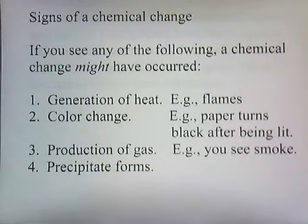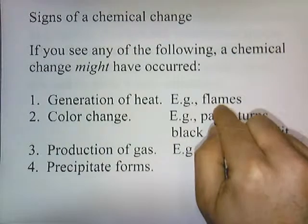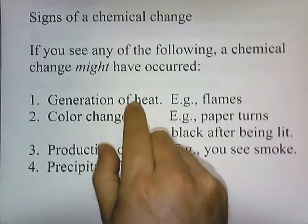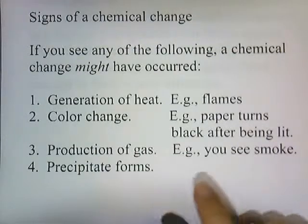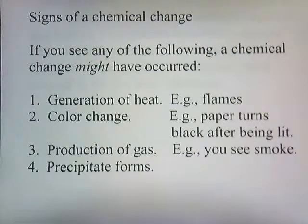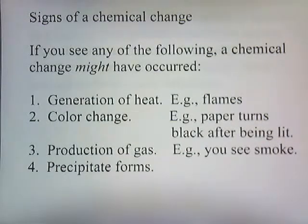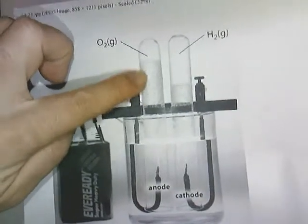Signs of a chemical change — how do you know when a chemical change has occurred? If you see any of the following, a chemical change might have occurred. Take burning a piece of paper as an example: you see flames, so heat being generated is one sign. The paper also turns black, so a color change is evidence. You also see smoke — production of a gas is another sign. In the electrolysis example, the bubbles forming are also evidence of a chemical change.